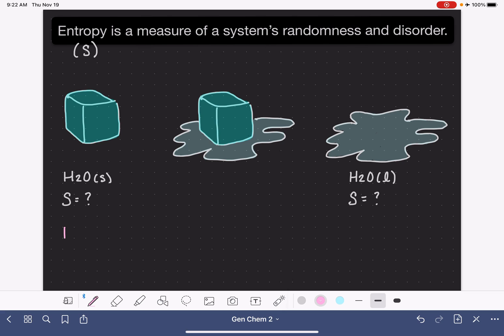For any system, for all systems, the value of entropy is always greater than zero. So this means that all systems, no matter what they are, they all have some degree of randomness or disorder. There is no system that has entropy equal to zero. It is not possible. Everything has an element of randomness or disorder to it.